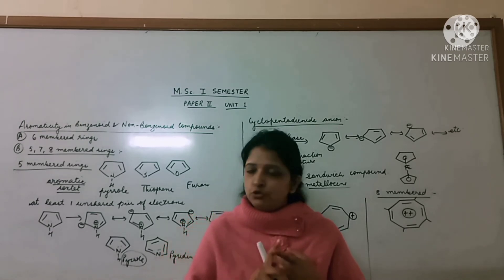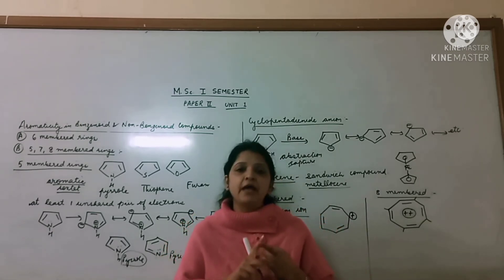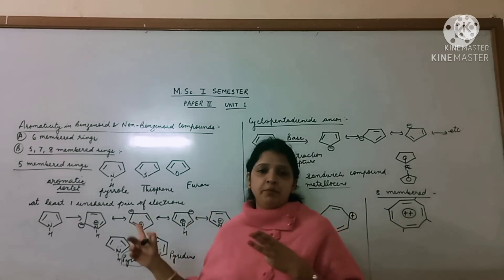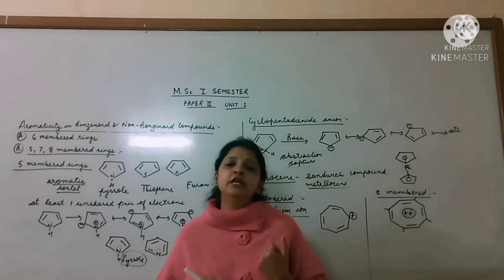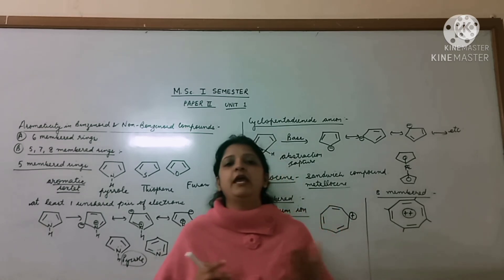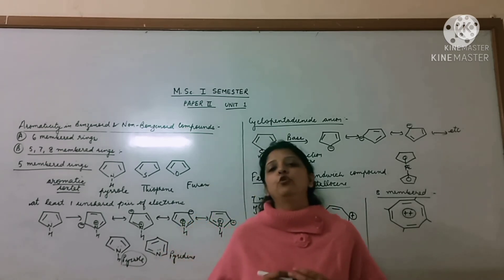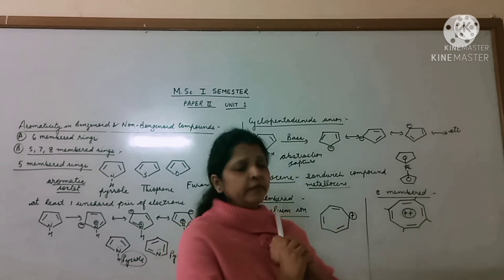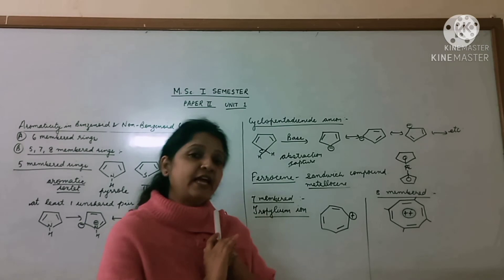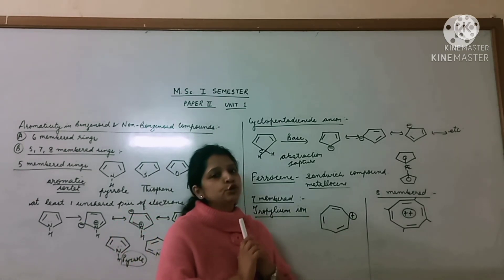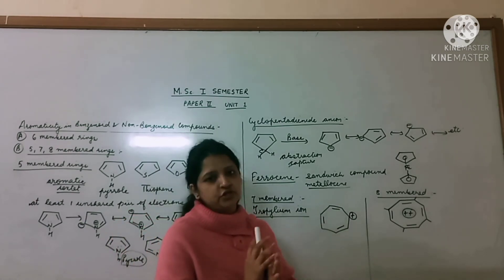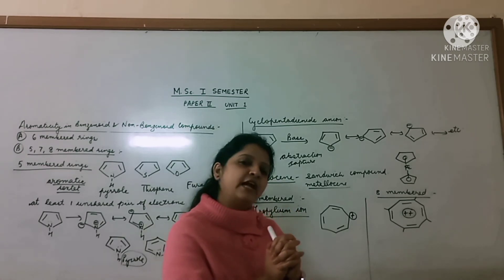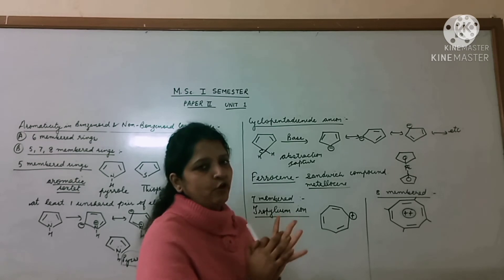In summary for five-membered ring systems: we have heterocyclic compounds — pyrrole, thiophene, furan — and we have seen how the heteroatom's unshared pair of electrons is involved in the ring and contributes to aromaticity. We also saw how the cyclopentadienyl anion is formed and shows aromaticity through its resonating structures. Ferrocene is also a sandwich compound that shows aromaticity.